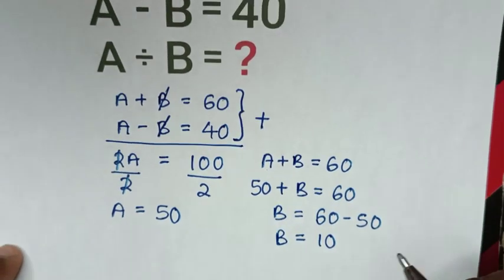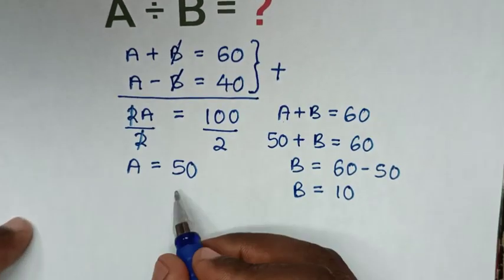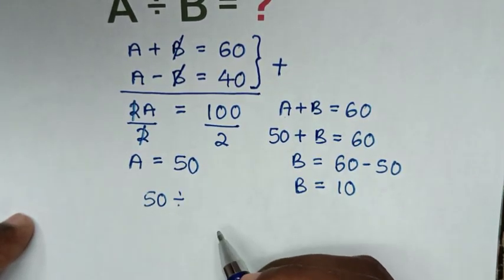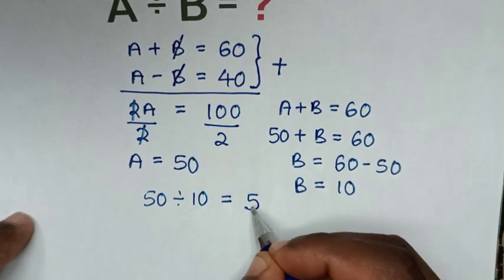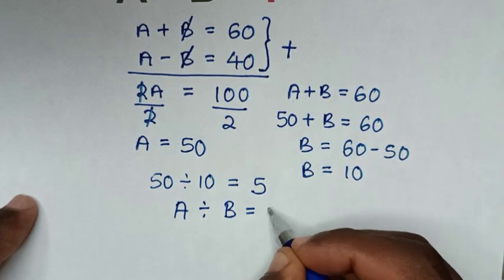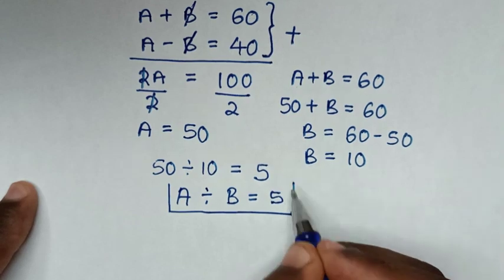Our problem asks for A divided by B. Since A is 50 and B is 10, 50 divided by 10 equals 5. Therefore, A divided by B equals 5. This is our final answer.